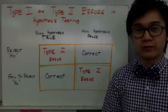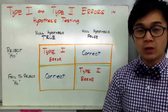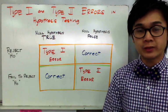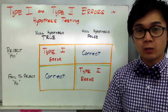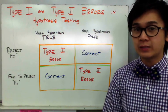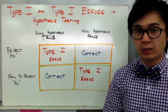We have two types of errors in hypothesis testing: the type 1 error and the type 2 error. For today, we're going to differentiate the difference between type 1 and type 2 errors.